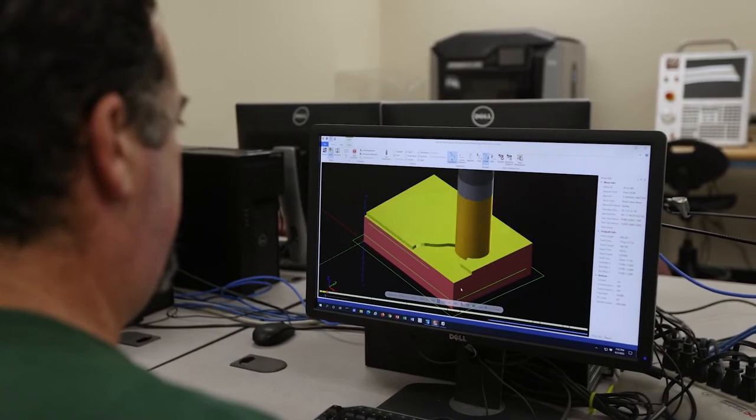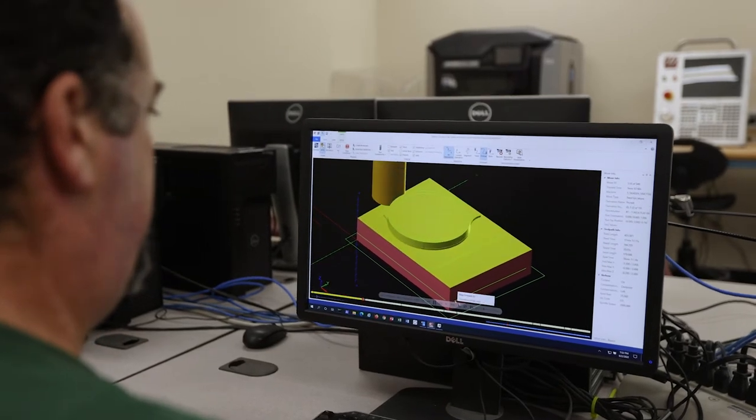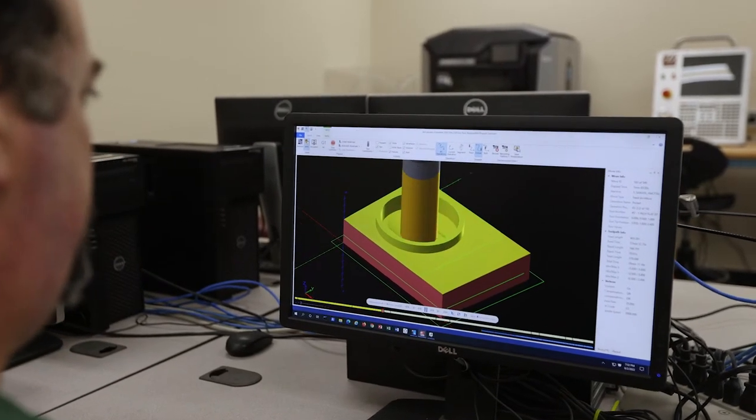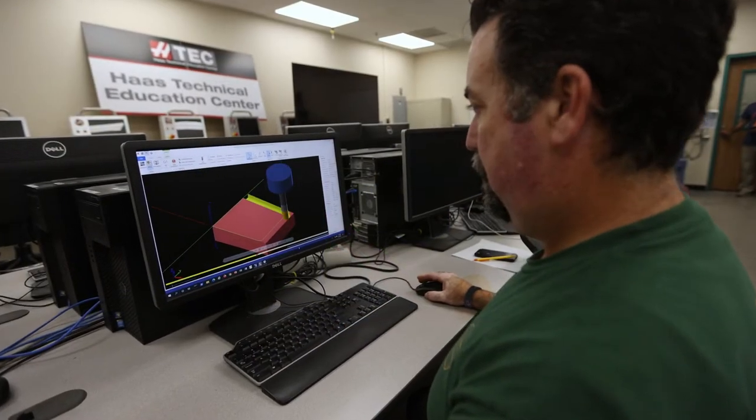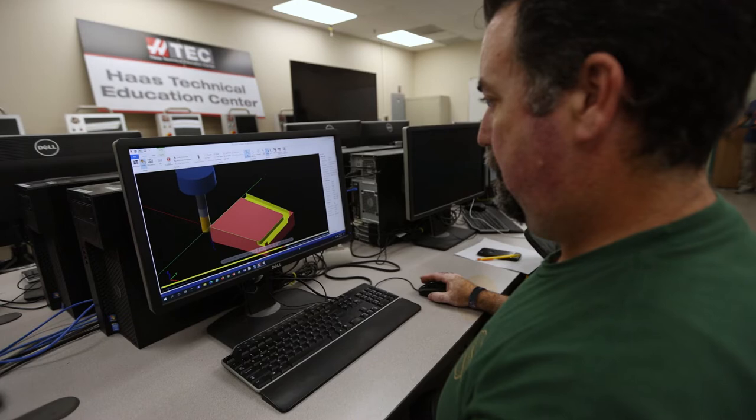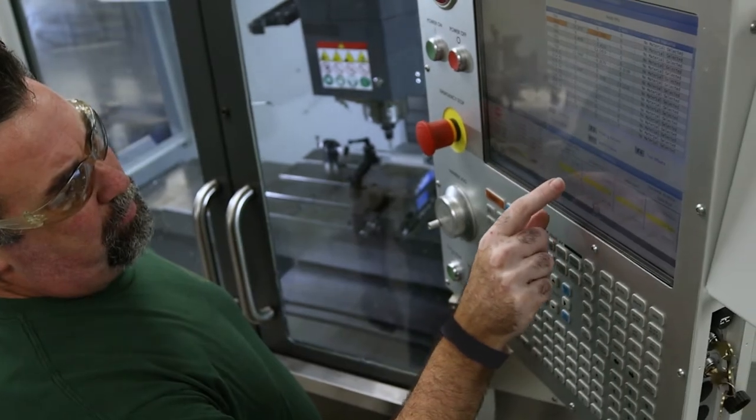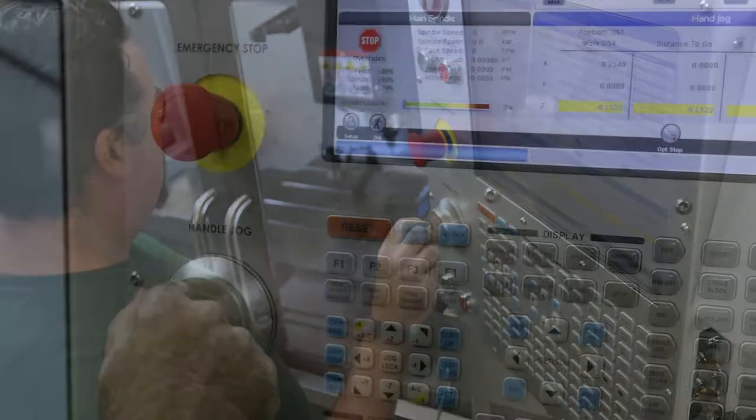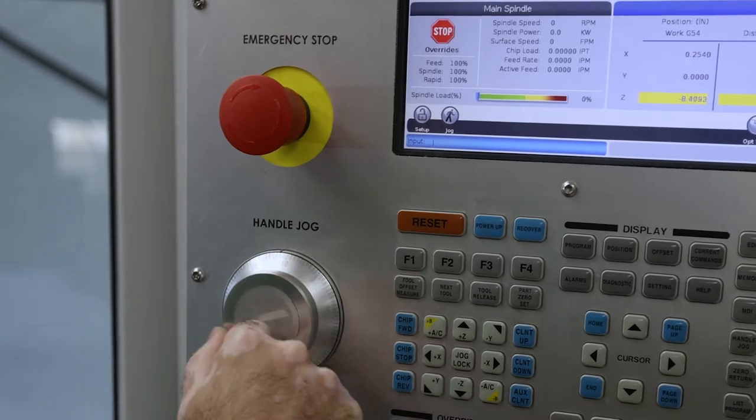They can expect to learn the G-code programming. They can expect to learn the Mastercam software level 1 and level 2. They can do 2D parts, 3D parts, and then they can create the program on the software, set up the machine, and we provide material if they need it so they can create their own part here.